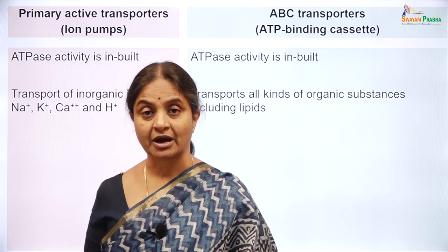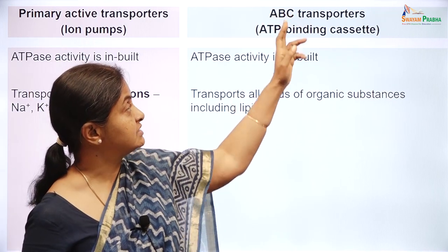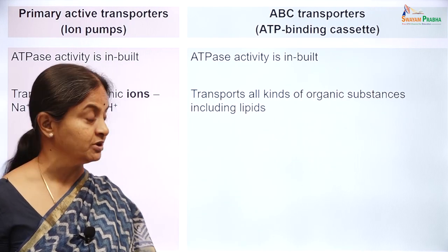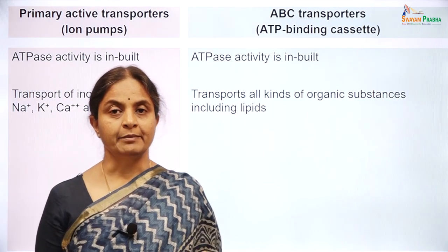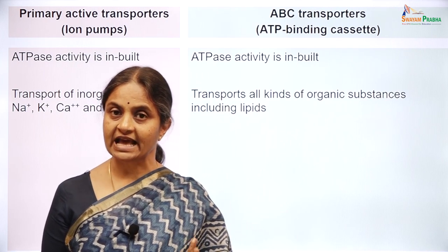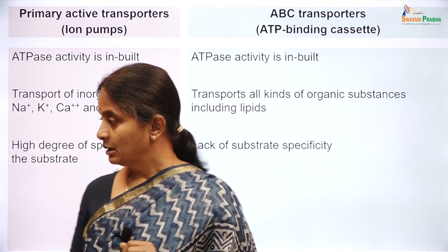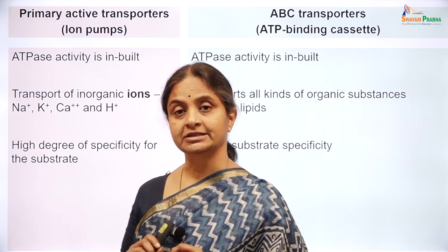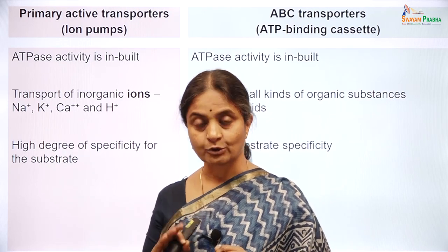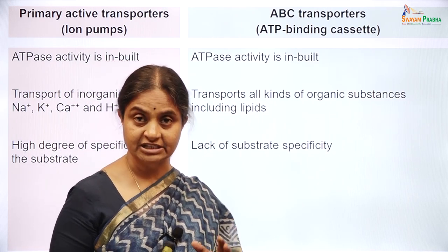While ion pumps are specific for some ions, ABC transporters — where ABC stands for ATP-binding cassette, which is a common motif in all these transporters — can transport a variety of substances: organic anions, cations, etc. Sometimes they may transport even inorganic ions. While the ion pumps have a high degree of specificity, for example the proton pumps will pump only protons and the calcium pumps will only transport calcium ions, the ABC transporters lack substrate specificity.